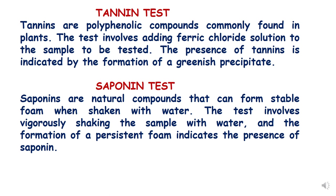The principle behind the tannin test is that tannins are polyphenolic compounds commonly found in plants that give astringency. The test involves adding ferric chloride solution to the sample, and if tannins are present, it gives a greenish precipitate on addition of ferric chloride solution.